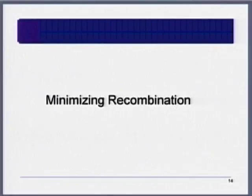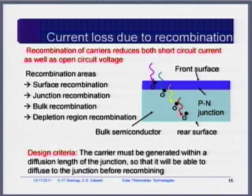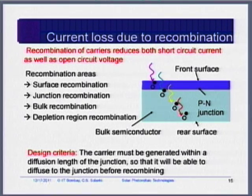Now we want to minimize recombination. The two main design mantras for a solar cell are: increased absorption and reduced recombination. Increased absorption means low reflection. Reduced recombination means low recombination losses. Quantum efficiency tells us where recombination is taking place. If quantum efficiency is low at 400 nm, it indicates recombination near the surface.